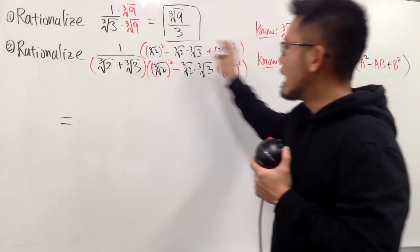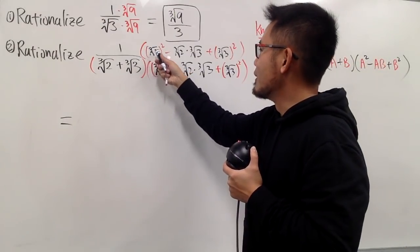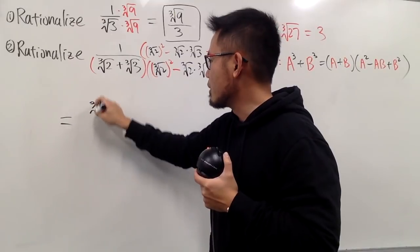And now, on the top, we can just do some quick calculation. For example, the cube root of 2 squared, you can just square the 2, right? So, we can write that down as the cube root of 4.